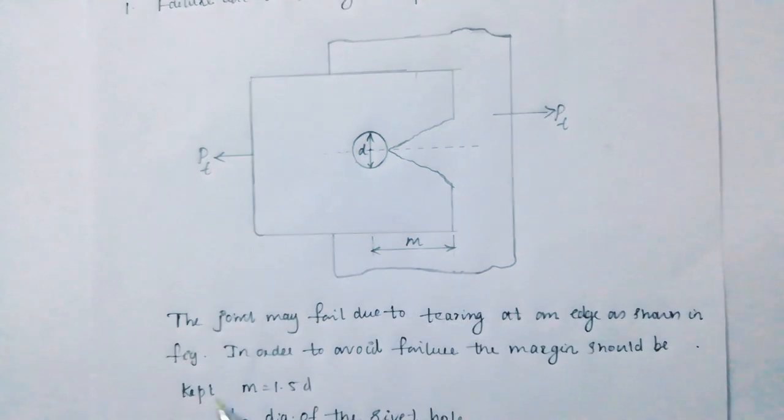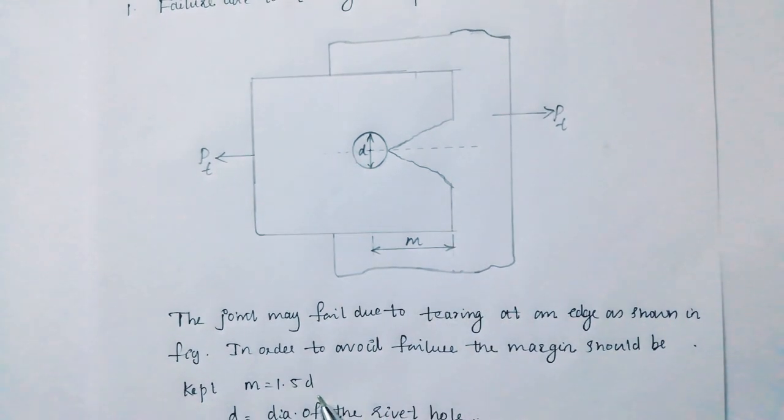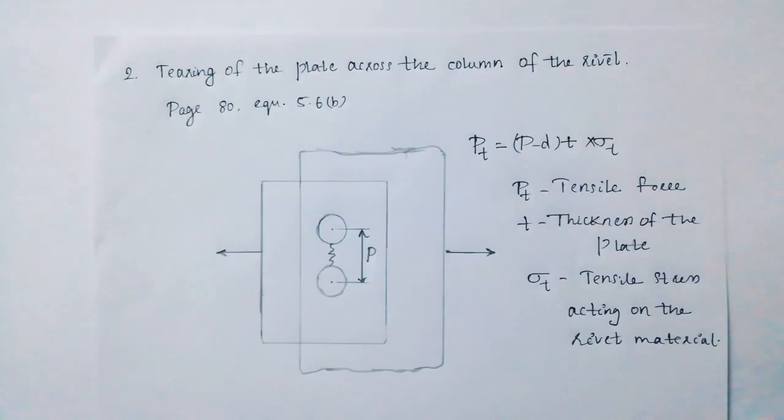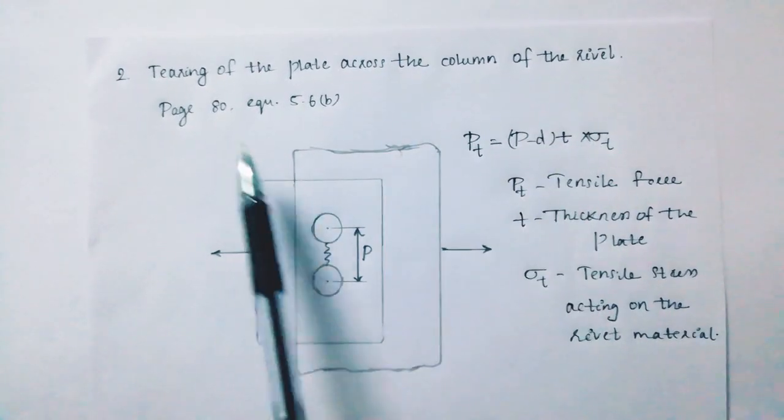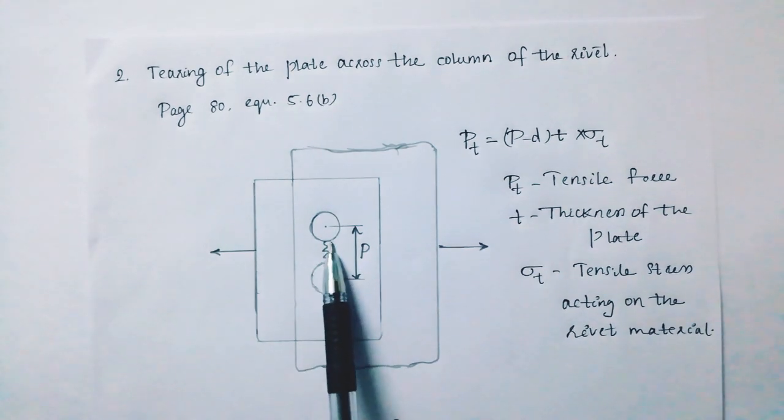The hole diameter is correct, margin of 1.5D. Now looking at tearing of the plate across the column of the riveted joint. PT is the tearing stress.